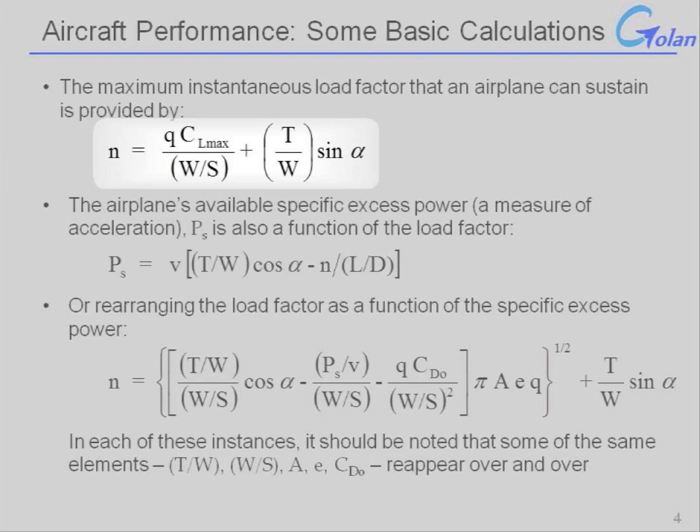We will find that the maximum instantaneous load factor is directly related to the maximum lift coefficient that the design is capable of, and that it is inversely related to the wing loading. So lower wing loading translates directly into superior maximum instantaneous load factor, assuming all else is equal.